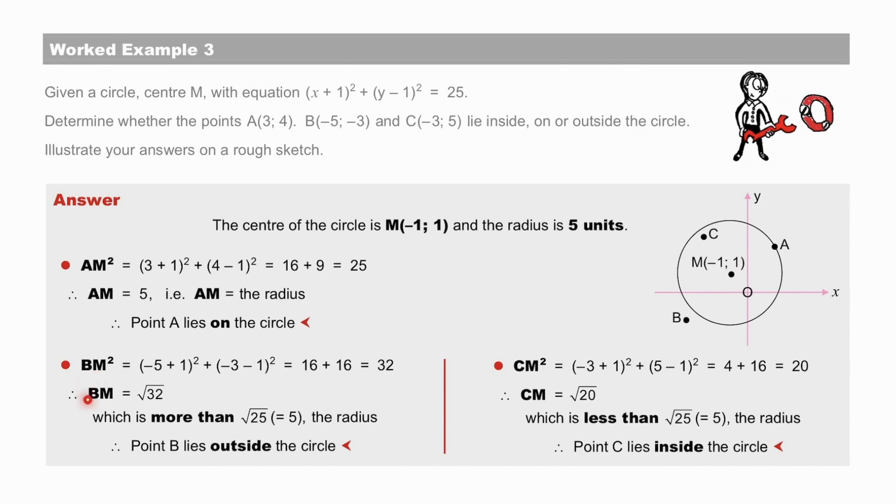The distance from B to M is equal to the square root of 32, which is more than the radius, and therefore B lies outside the circle. The distance from C to M is equal to the square root of 20, which is less than the radius, and therefore the point C lies inside the circle.